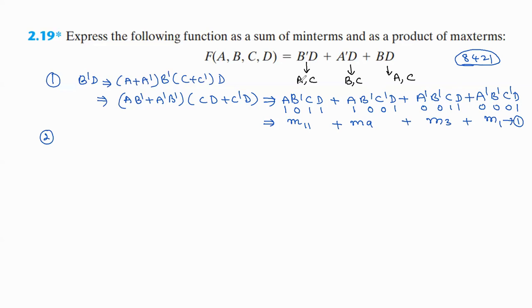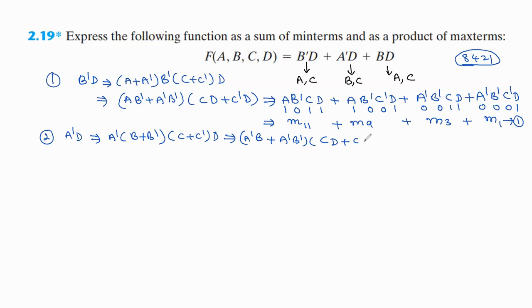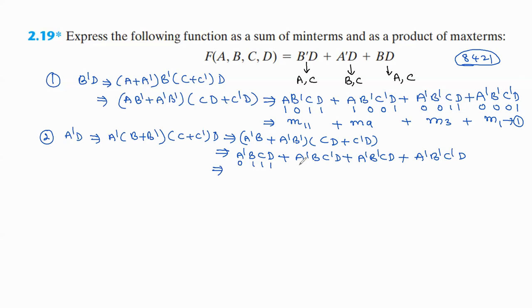For the second product term a'd, we insert missing variables b and c. So a'd multiplied by (b + b') and (c + c') gives a'bd, a'b'd, a'bcd, a'bc'd, a'b'cd, and a'b'c'd. Assigning binary values: 0011 = m3, 0101 = m5, 0111 = m7, 0001 = m1. This gives us m7 + m5 + m3 + m1 as our second equation.